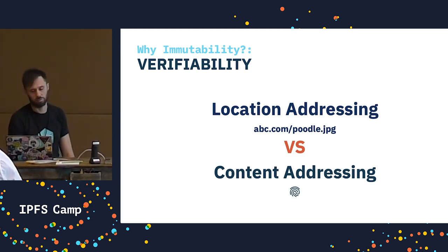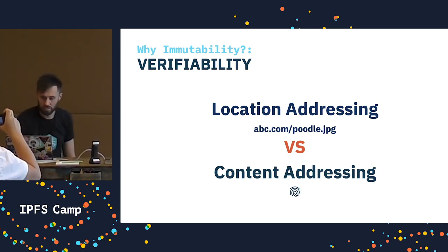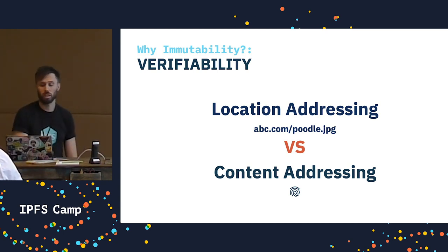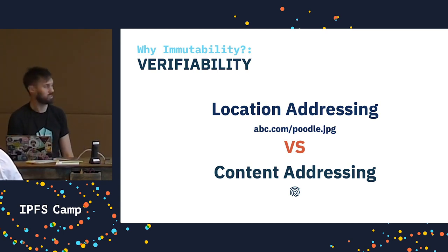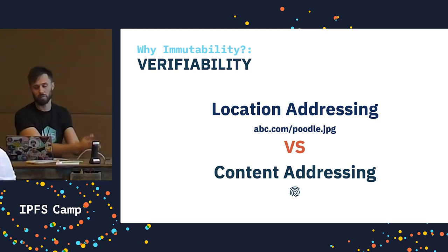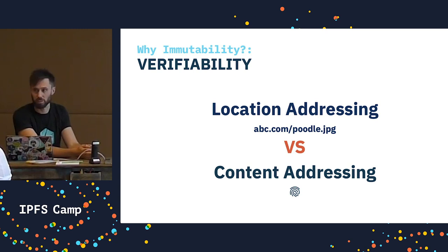What we have on the web today is location addressing — it tells us where the data is stored but not much else. Content addressing, on the other hand, is where we use a hash to access the content, and it allows us to verify the content we receive is the content we asked for.